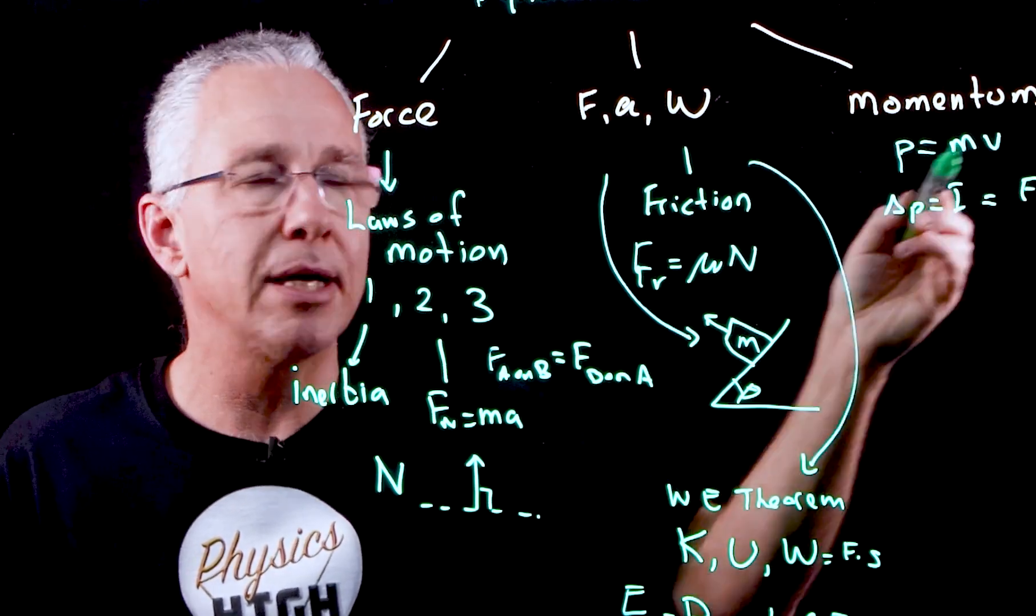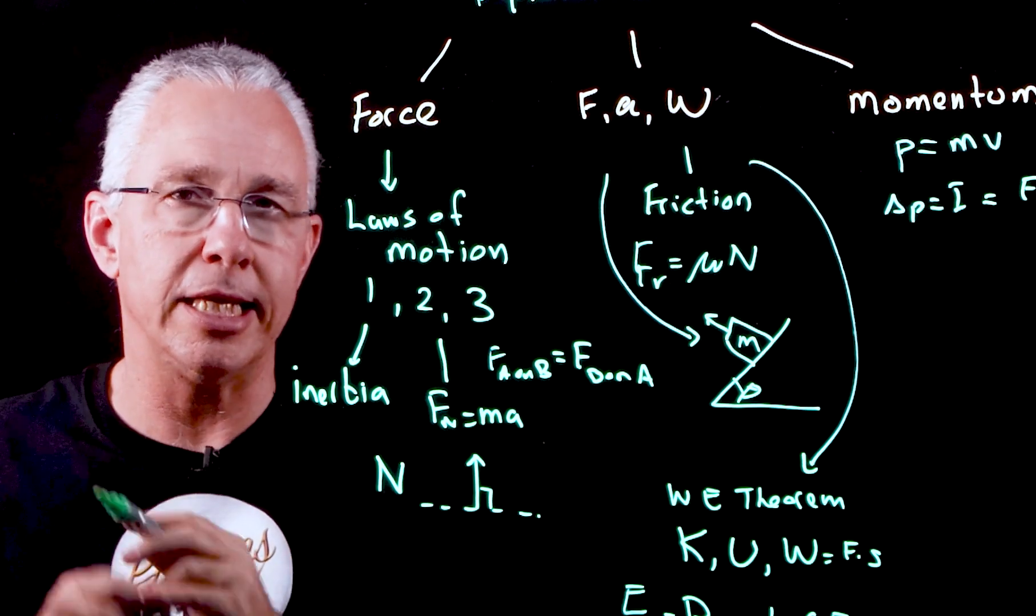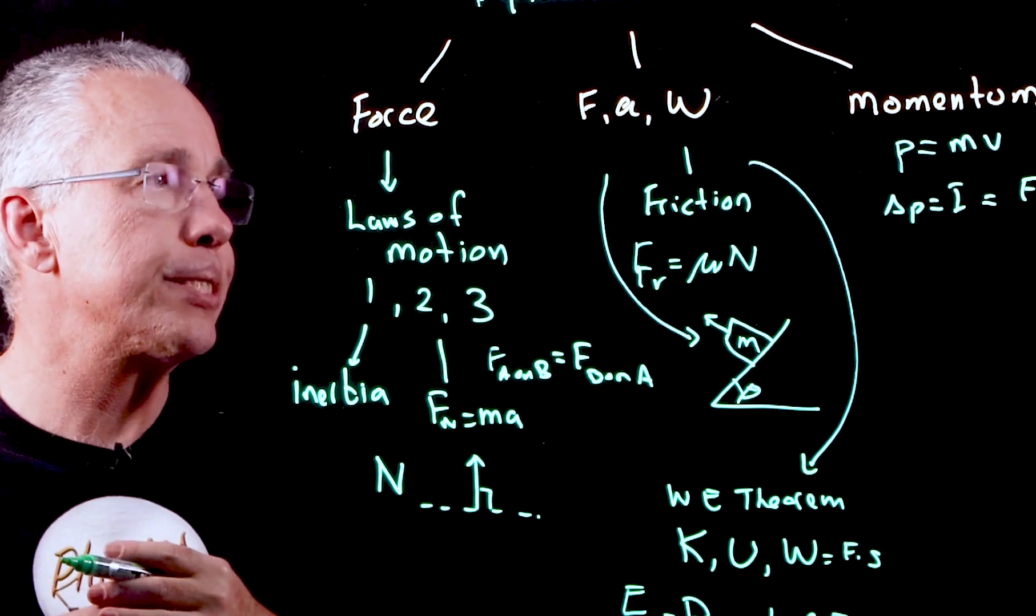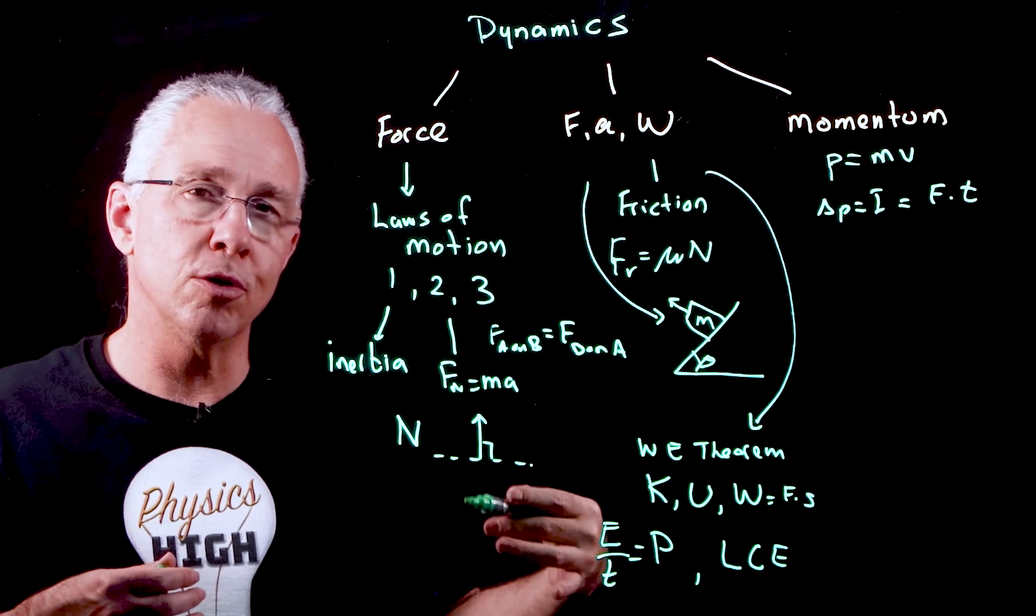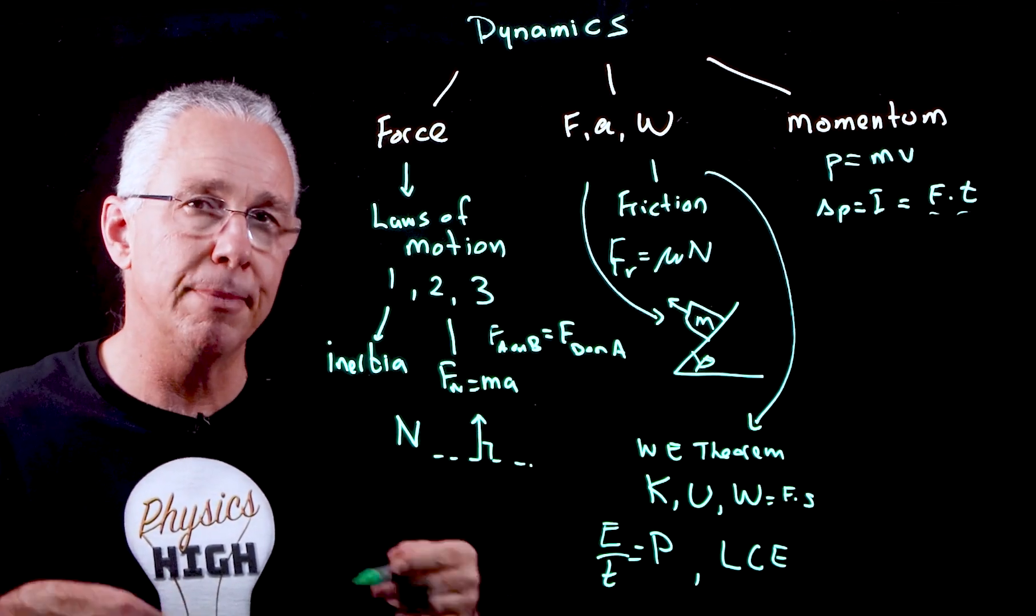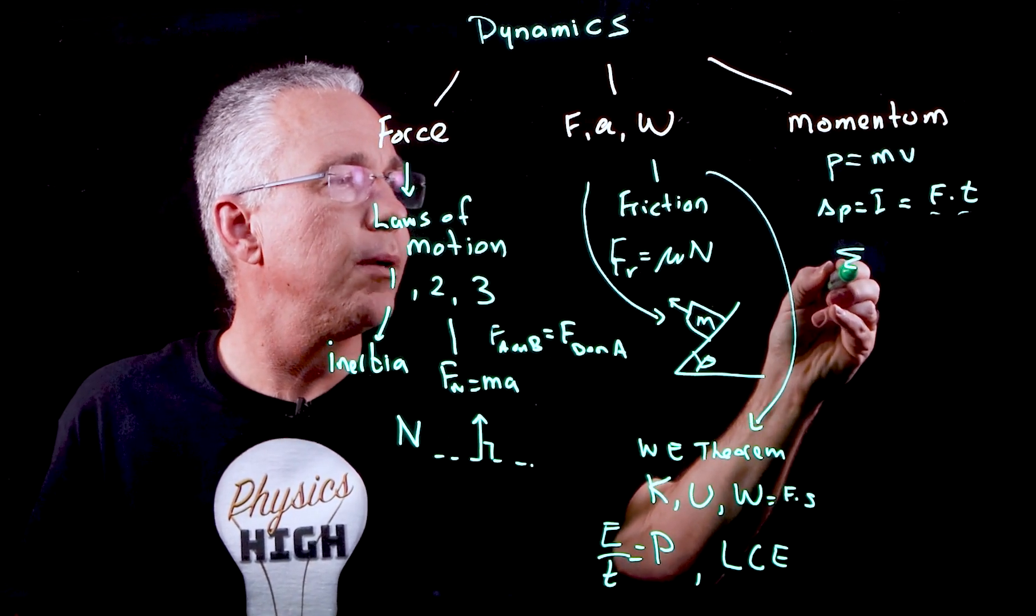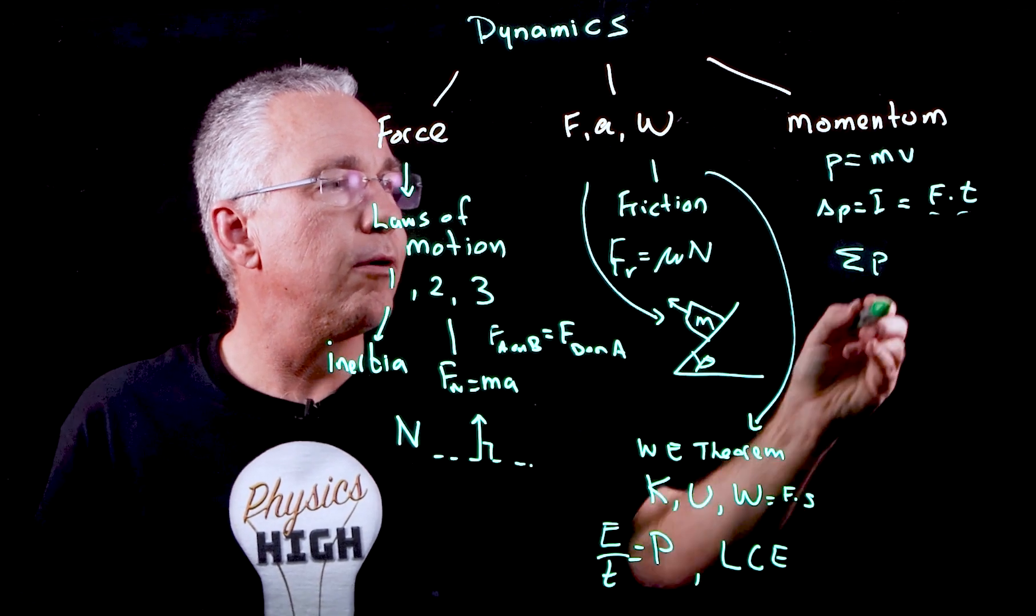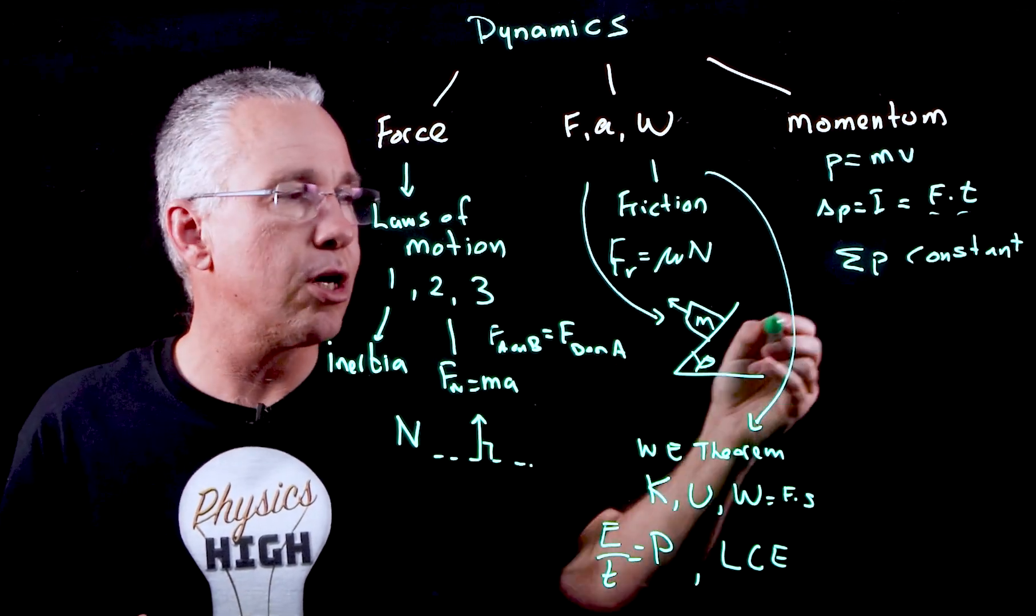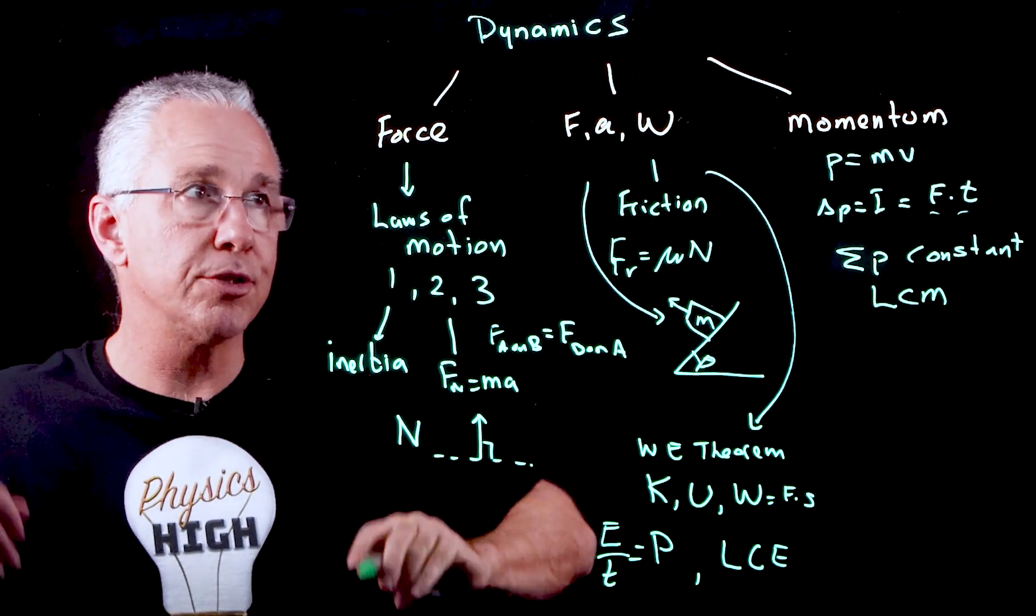And so you might have a change in momentum of the object, which is referred to as impulse. And so that ends up being the force multiplied by the time. Now you can actually derive that from your understanding of forces and your understanding of kinematic equations. If an object interacts, Newton's third law says they will experience the same force for the same amount of time, but in the opposite direction. And so what we end up saying is that the total momentum in a system remains constant, and this is commonly stated as the law of conservation of momentum.